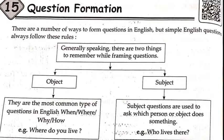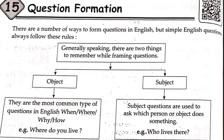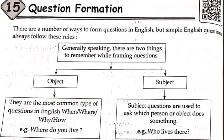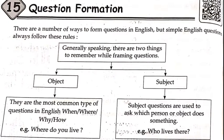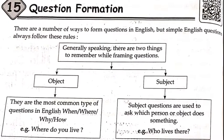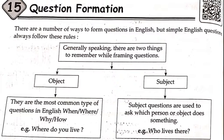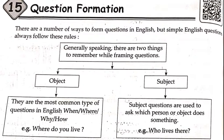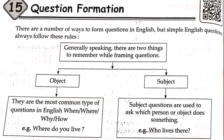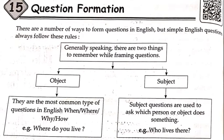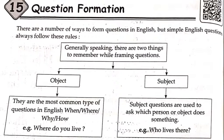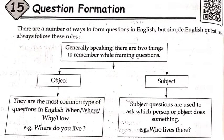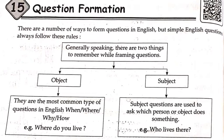Example: Where do you live? Subject questions are used to ask which person or object does something. Example: Who lives there? Now see what types of words are used for framing a question. Basically, when, where, why, and how are used, and sometimes who is also used with subject. When, where, why, how are used with object.